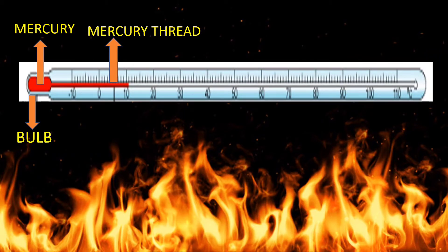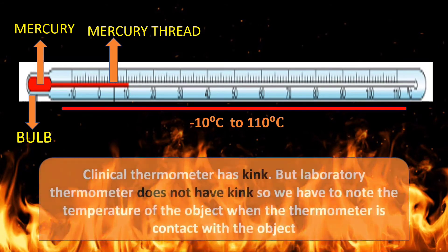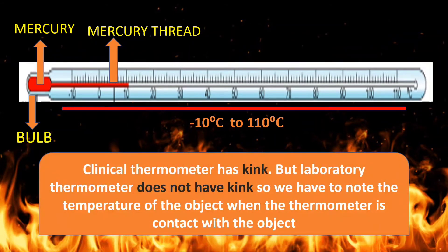The range of the laboratory thermometer is generally from minus 10 degrees Celsius to 110 degrees Celsius. The clinical thermometer has a kink in it, but the laboratory thermometer does not have a kink, and because of this we have to note the temperature while the thermometer is still in contact with the object.